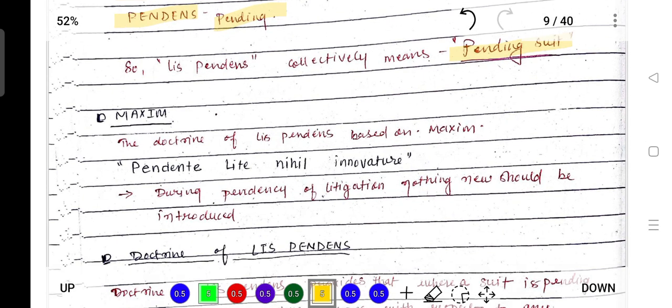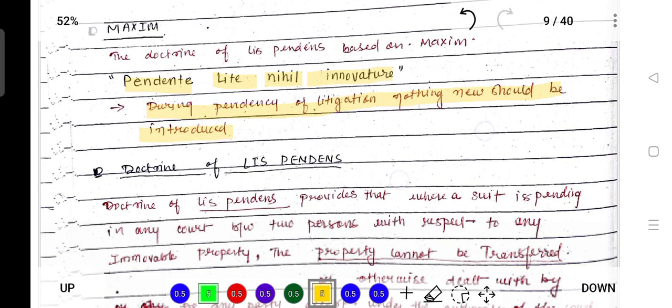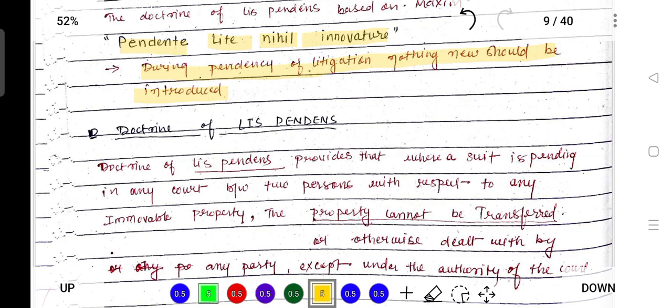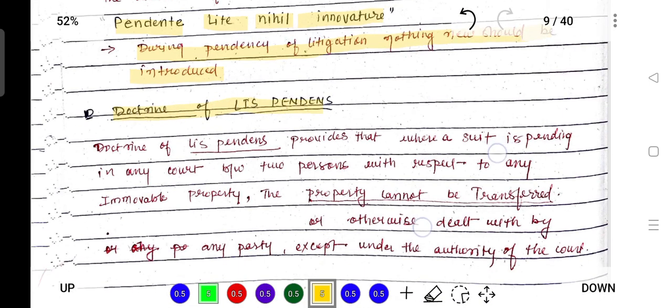The doctrine of lis pendens is based on the maxim pendente lite nihil innovetur. What does pendente lite nihil innovetur mean? The meaning of this maxim is: during the pendency of litigation, nothing new should be introduced. This is the simple meaning of pendente lite nihil innovetur.